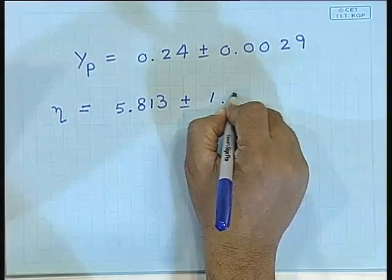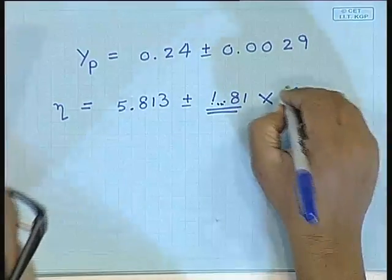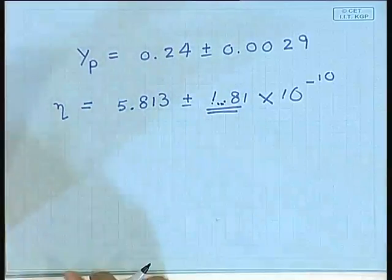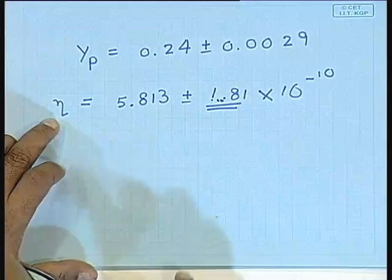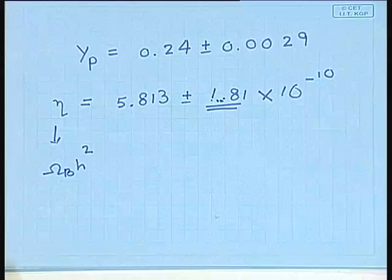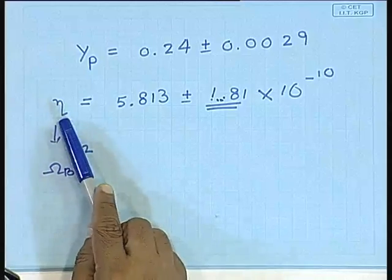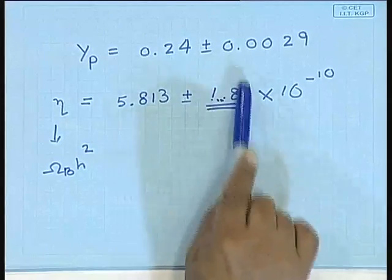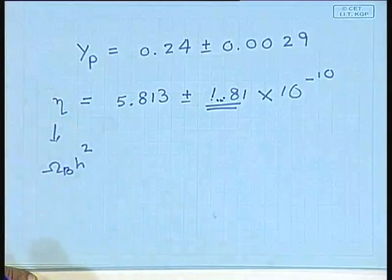These differences have since been resolved through better observations and better atomic data. Current observations indicate the helium fraction is 0.254 ± 0.0029, and they require η to be (5.8 ± 1.8) × 10^{-10}. The helium abundance depends on Ω_baryon h² but with only a very weak dependence, so the uncertainties in η are pretty large and it does not put very severe constraints on Ω_baryon h².